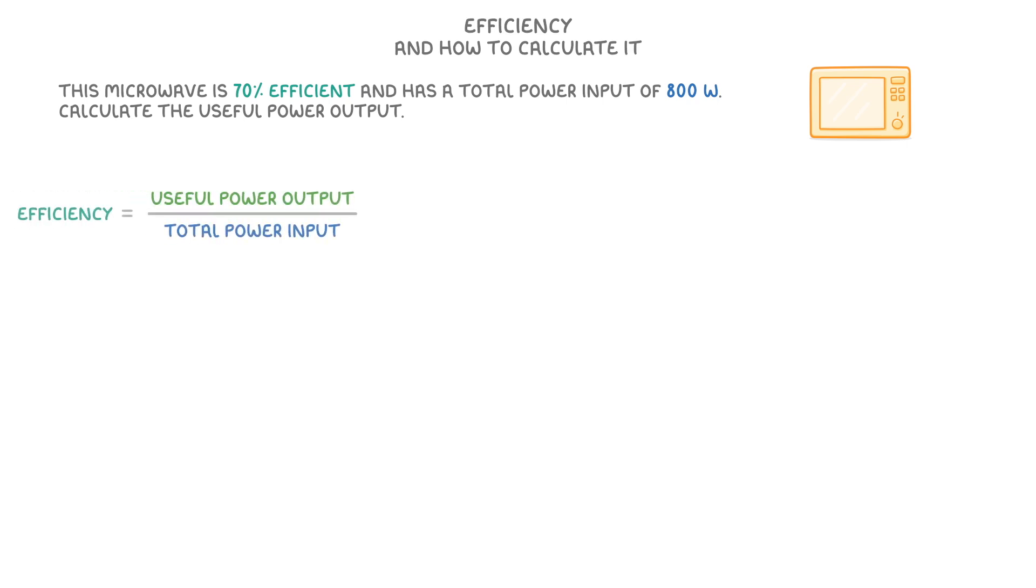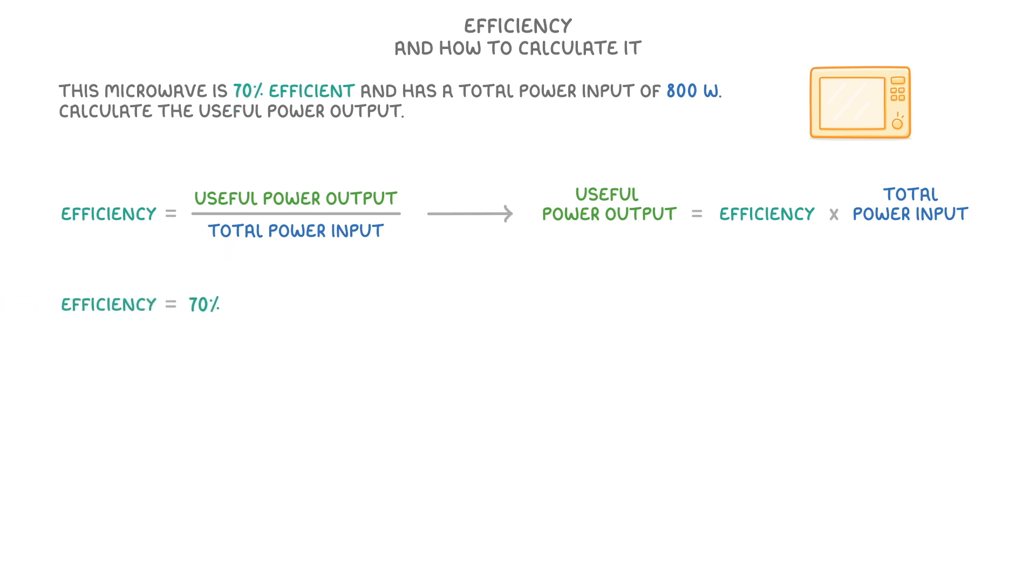First, we need to take our efficiency equation and rearrange it to get useful power output by itself. We also need to convert our efficiency into a decimal by dividing 70% by 100 to give 0.7. Finally, we can plug our values into the equation, which would be 0.7 times 800 watts, to give us a useful power output of 560 watts.